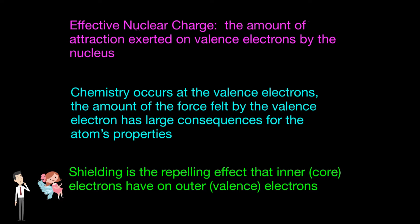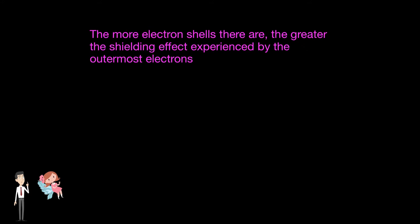Core electrons have a huge effect on the force exerted on the valence electrons, known as shielding. Shielding is a repelling effect that the inner electrons have on the outer electrons. The electrons are not stationary and are in constant motion in what is called an orbital. So repulsion is felt in all directions, resulting in a decrease in the amount of attraction felt by the valence electrons from the nucleus. The more electron shells there are, the greater the shielding effect experienced by the outermost electrons.